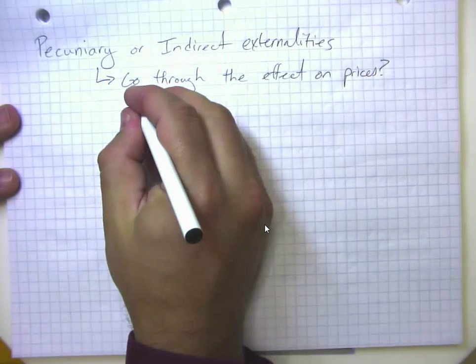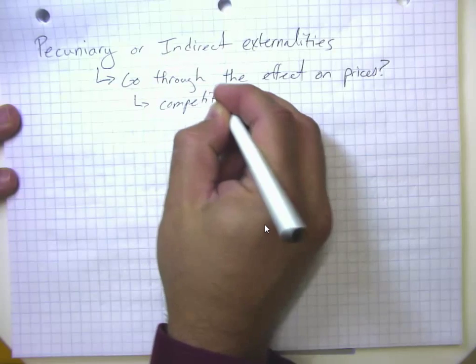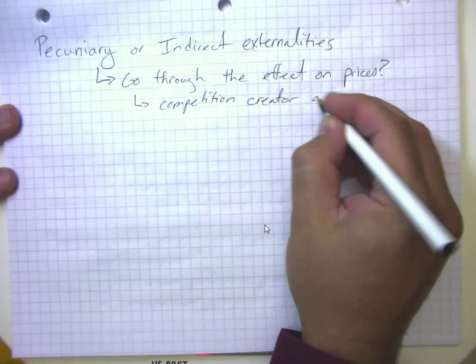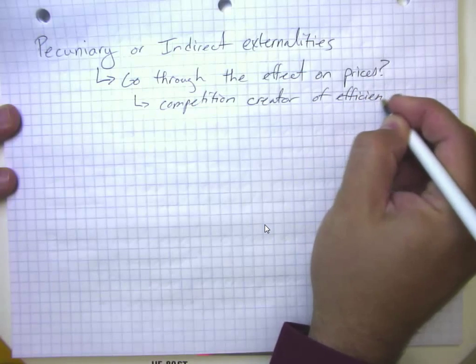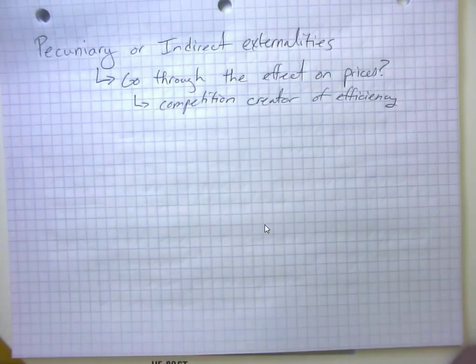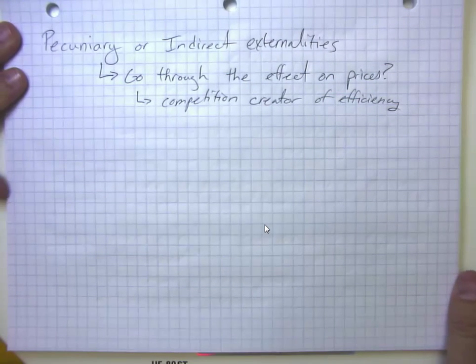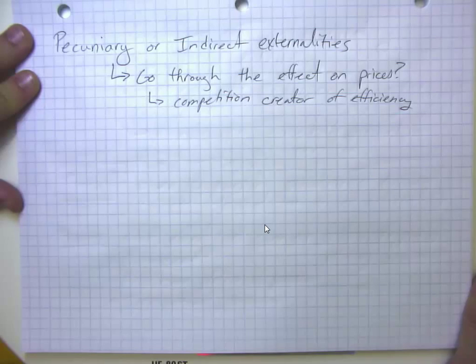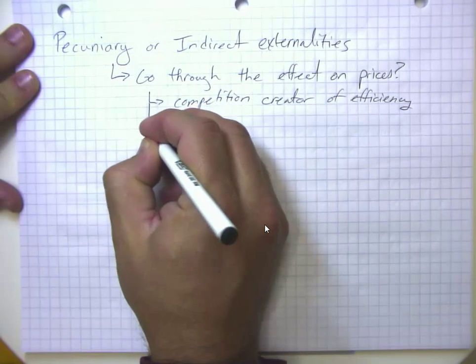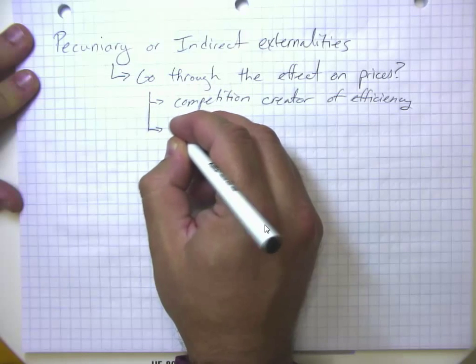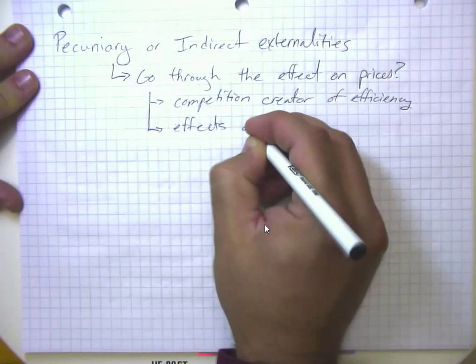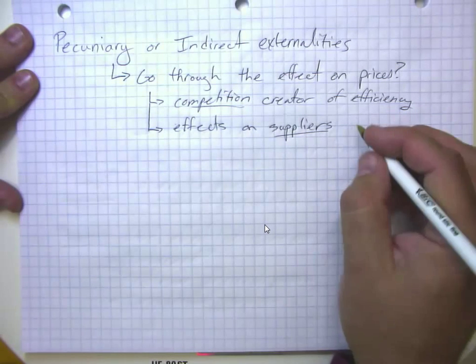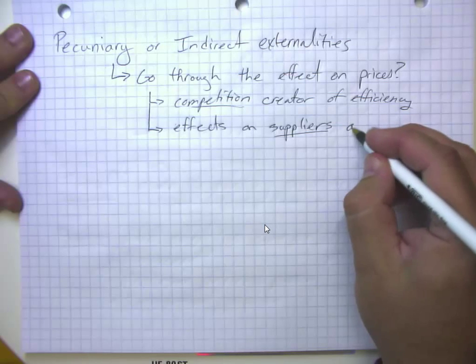So you can see that things like competition, yes, having competition makes someone worse off. But competition is itself the creator of efficiency. Likewise, we could think about a situation where if a firm sells more products, of course, that increases the demand for its labor. But if labor markets themselves are not containing significant market inefficiencies, then we're going to see that the effects on suppliers, just like the effects on competitors went through prices, the effects on suppliers of labor or raw material or leased space in a mall, already go through prices.